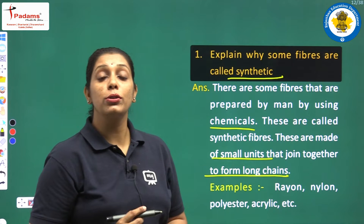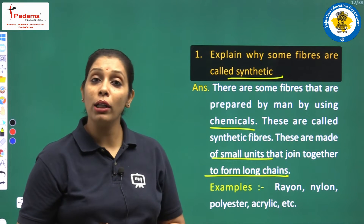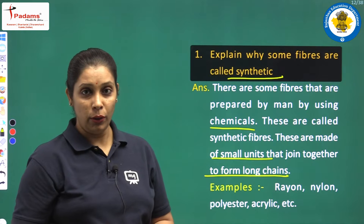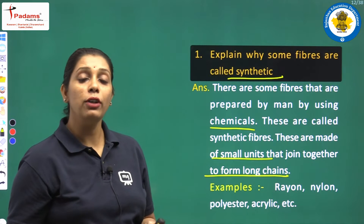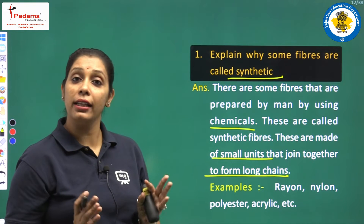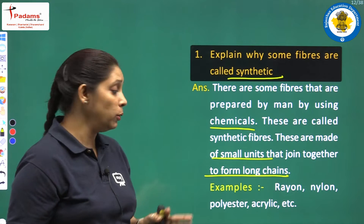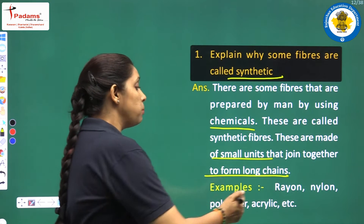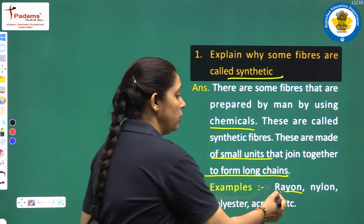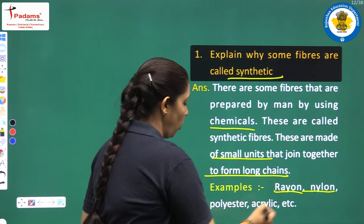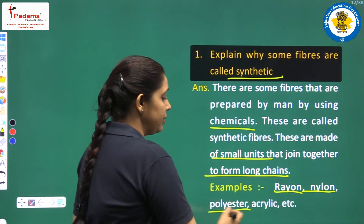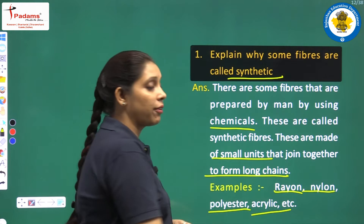We can say they are also polymers. We have to write the examples also. Examples are rayon, nylon, polyester, acrylic.